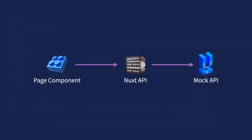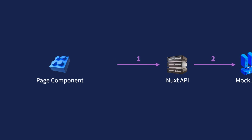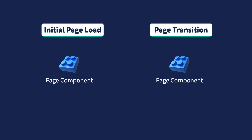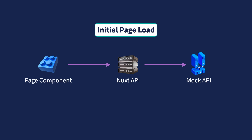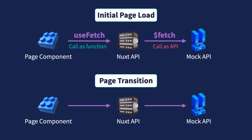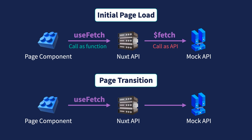You might be wondering: since it's making two hops to get to the data, isn't this slow? It depends on how the page is loaded — is it loaded as the initial page, or is it loaded through a page transition? For the initial page load, the page component is rendered on the server. UseFetch doesn't make an API call to the API route; it would just call it as a function, so there's no performance implication on initial page load — an API call is only needed for the mock API. But for page transition, useFetch will be fetching from the client side, making an actual API call to access the API route. Two hops will be required to get to the actual data, so it will be as slow as it sounds. In summary, initial page load will not make a difference, but page transition will be slower.